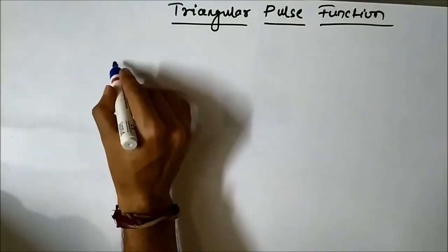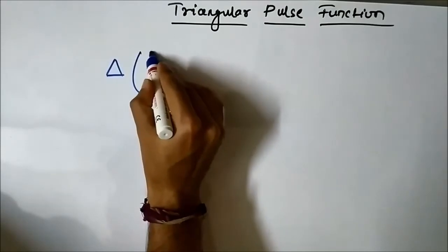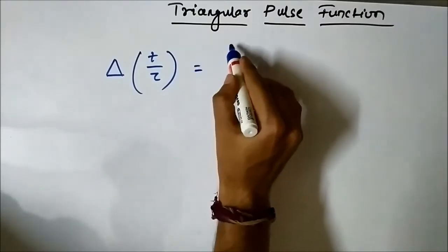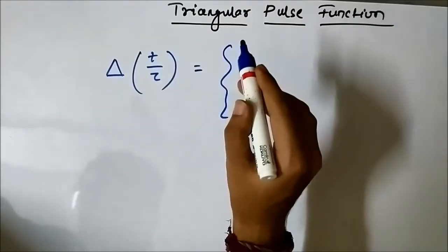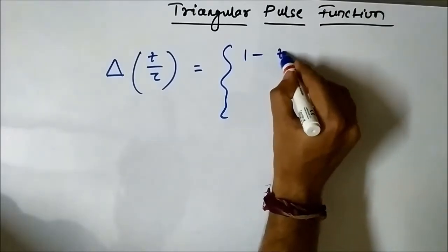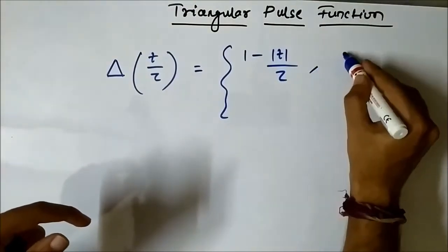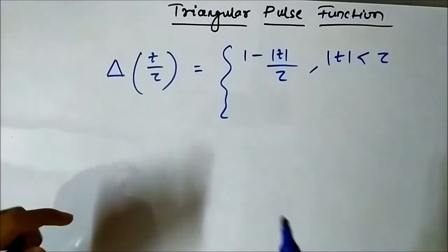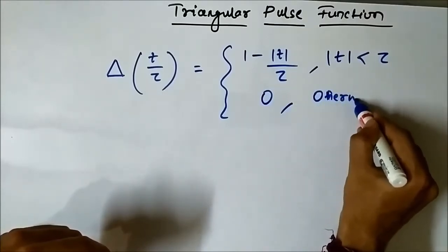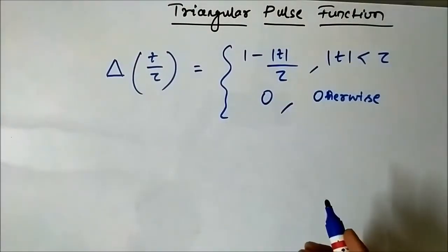The triangular pulse function is represented as tri(t/τ), which is equal to 1 minus |t|/τ for |t| less than τ, and 0 otherwise — meaning everywhere else it is 0. This is the mathematical representation of the triangular pulse function.